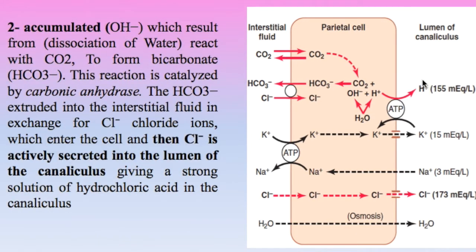Now we have the hydrogen ion inside the lumen of the canaliculus and we need the chloride ion. The accumulated hydroxide ion, which came from the dissociation of water, will react with carbon dioxide by the aid of the enzyme carbonic anhydrase to form the bicarbonate ion. The bicarbonate ion is then extruded to the interstitial fluid in exchange for chloride. This chloride ion is then actively secreted into the lumen of the canaliculus, giving a strong solution of hydrochloric acid, which is secreted to the lumen of the gastric gland.